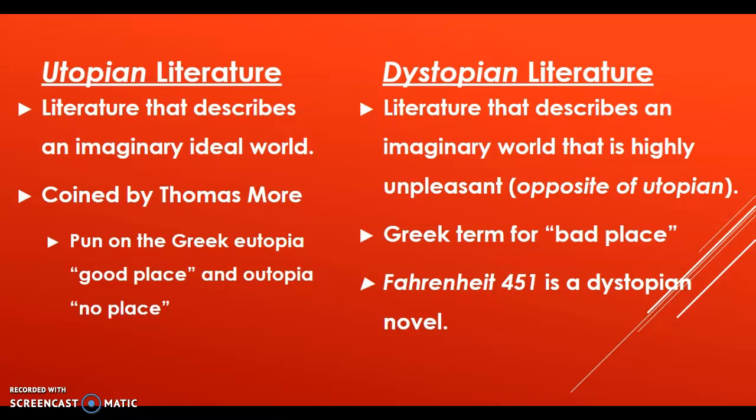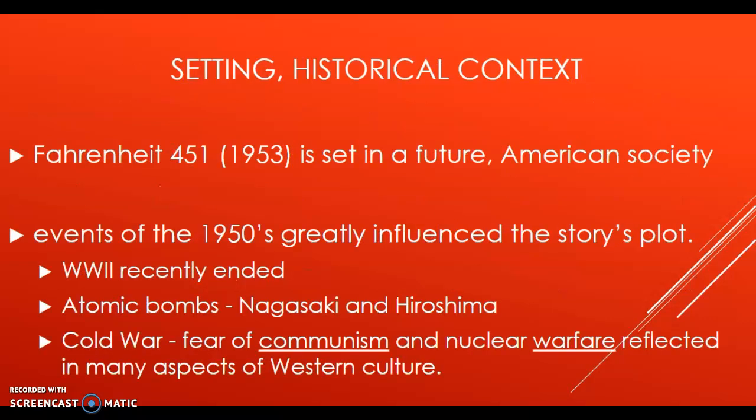Dystopian literature is the opposite of utopian. It describes an imaginary world that is highly unpleasant. Think about the Odyssey and when Odysseus went to Hades — the land of the dead. That world could be very unpleasant. Dystopian comes from the Greek term meaning bad place. Fahrenheit 451 is a dystopian novel. So now that you know that, what do you expect to read about? You should expect some unpleasant treats. And then looking at the title, Fahrenheit 451 — Fahrenheit has to do with heat.